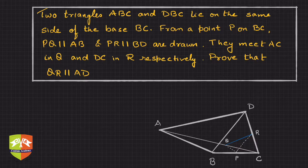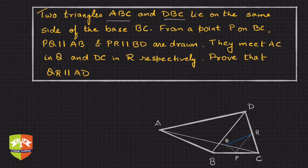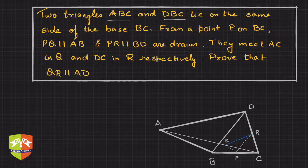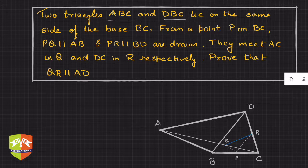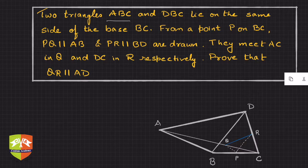In this question, it's given that two triangles ABC and DBC lie on the same side of the base BC. You can see the figure I have drawn — BC is the base and the two triangles ABC and DBC lie on the same side.